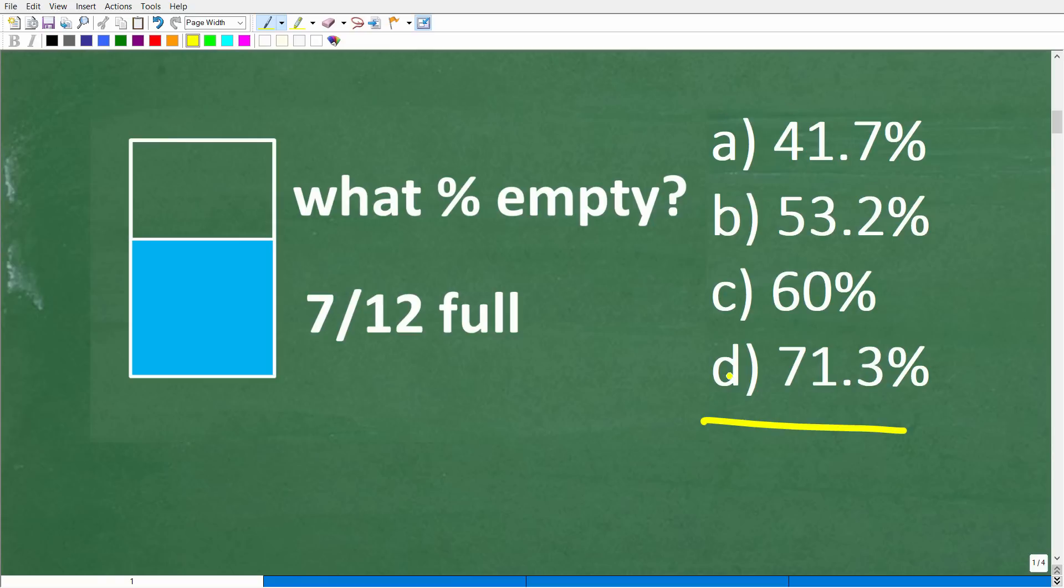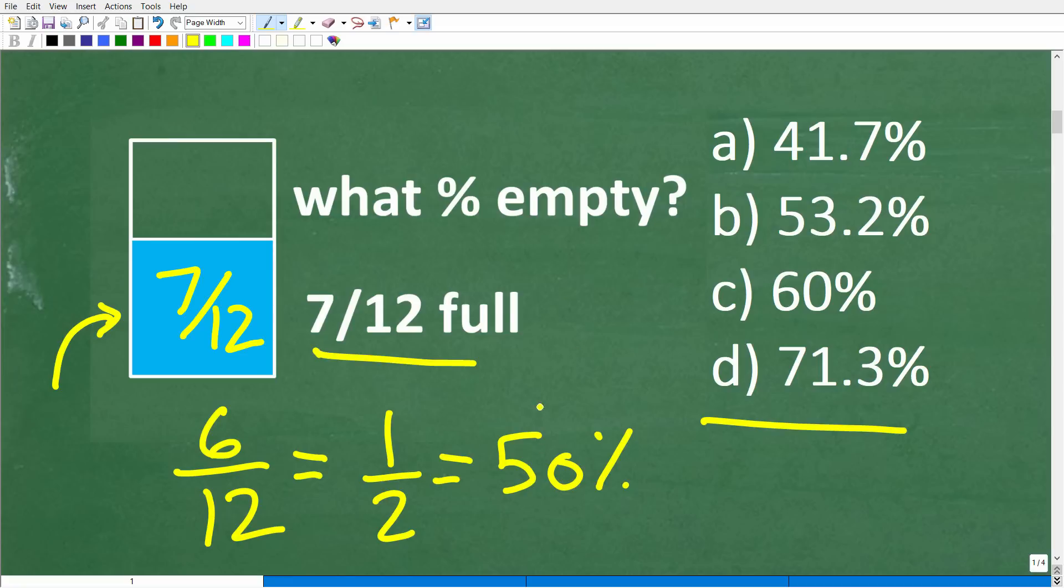So you can still reason through and get the correct selection here, because this right here is a big clue. So if the cup is 7/12 full, let's use another fraction here to kind of get a sense of what percentage this might be. So what if the cup was 6 over 12 full or 6/12 full? Well, that's one half, right? So one half, hopefully most people know that's equivalent to 50%. Well, the cup would be 50% full if it was 6/12 full.